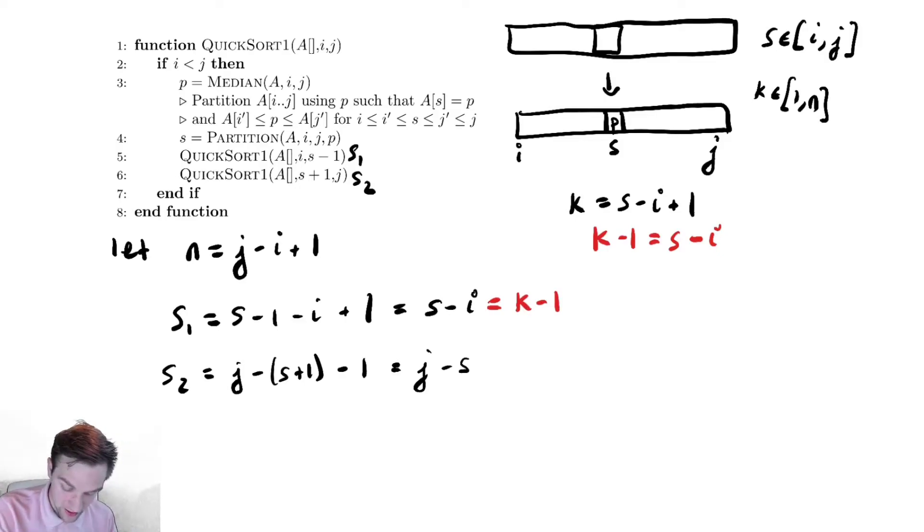And the bottom one, if I was to solve for s over here in our expression for k, if I solve that for s, I get s is equal to k plus i minus 1. Let's plug that in. And we get this is equal to j minus k plus i minus 1, which is equal to j, I'm gonna write this in a funny order, minus i plus 1 minus k. So that's actually very convenient, because j minus i plus 1 is just n minus k. So the size of my recursive calls depend on k in a very natural way.